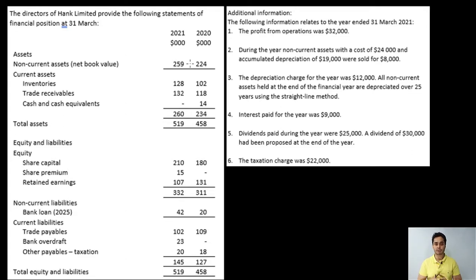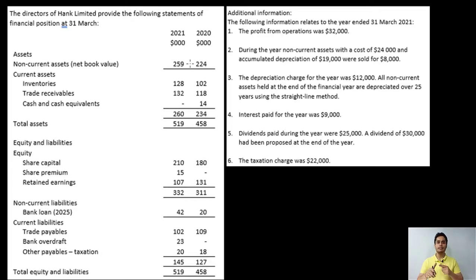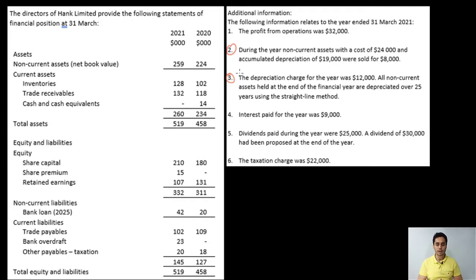The increase indicates that there are some purchases of new non-current assets, but I cannot put the difference directly in cash flow from investing activities as purchases of non-current assets. The reason is that there are certain adjustments for non-current assets. Whenever there is a balance sheet item with adjustments given, you will have to prepare working notes to calculate the missing numbers. Here, adjustments two and three are both for non-current assets — we'll see how to prepare the working note shortly.